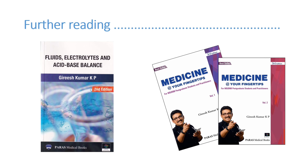In summary: whenever hypocalcemia is seen, first check albumin — if low, apply the correction factor; if corrected calcium is normal, no further management needed. Then check PTH to rule out hypoparathyroidism; take ABG to rule out respiratory alkalosis; do creatinine for renal failure, magnesium for hypomagnesemia, and phosphorus for hyperphosphatemia or hypophosphatemia. Rule out pancreatitis. For respiratory alkalosis, use a re-breathing mask and reassurance. For all other conditions, IV calcium gluconate as bolus, repeated doses, or infusion is the treatment.